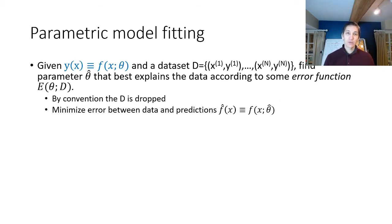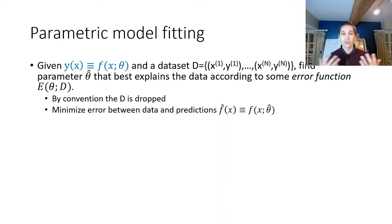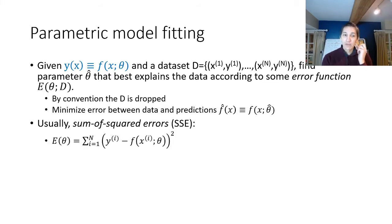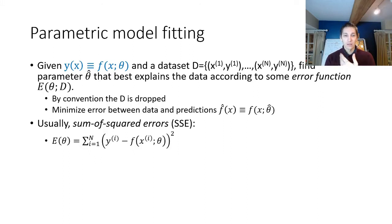Given a parametric model, how do we fit it to data? Suppose we have a dataset D of paired observations x and y, and we know which parametric model class we're fitting. We minimize some error function over the parameters θ to get an estimated parameter θ-hat. One very common example is the sum of squared errors, which takes the sum over all data points of the squared discrepancy between the output y and f(x, θ). This is a positive function with a minimum when we predict every output exactly.